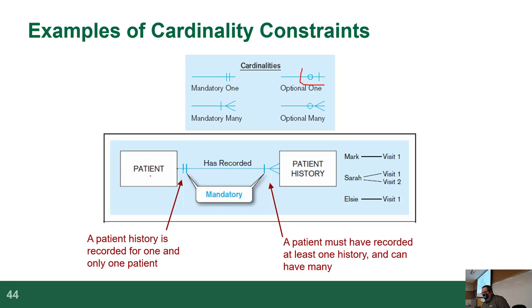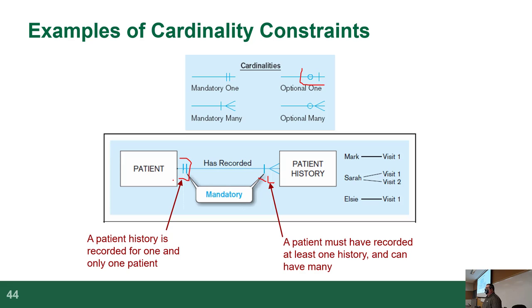Looking at the diagram at the bottom, a patient must have a history and can have multiple entries, but each patient history entry can only ever be associated with one and only one patient. A patient must have at least one history entry and can have multiple. By the same token, a patient history entry cannot be created unless there's a patient associated with it — a given history entry can only be associated with one patient, which makes sense because you don't want personal medical files associated with someone else.